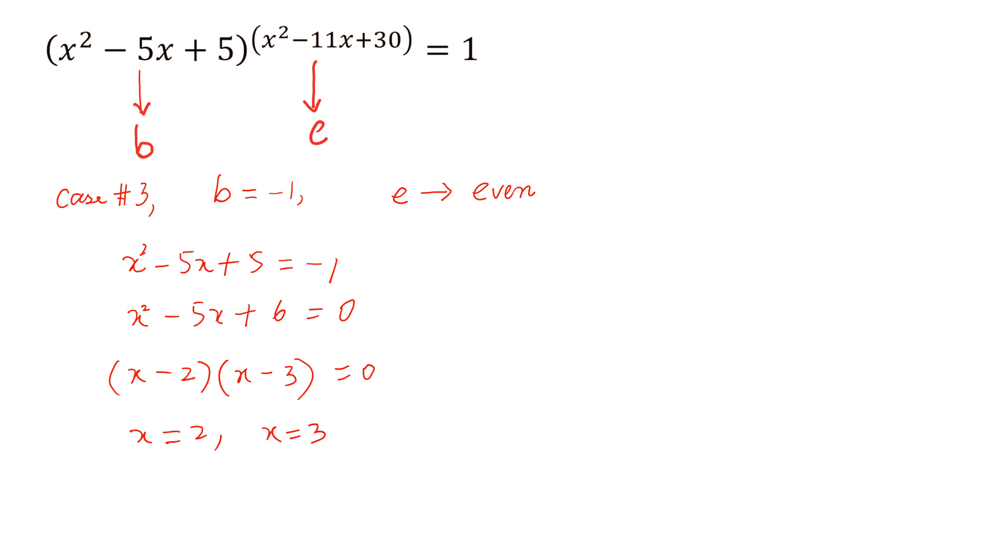Now we will check if we put these values in the exponent, so the exponent should be even. So if we put 2 here, 2² - 11(2) + 30, so this is equal to 4 - 22 + 30 and 34 - 22 is 12, so this is even.